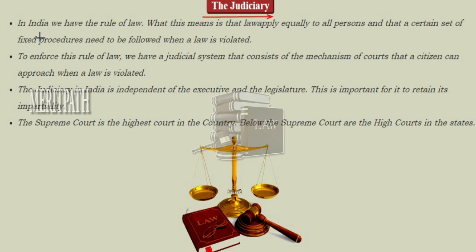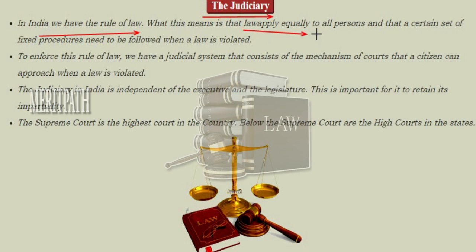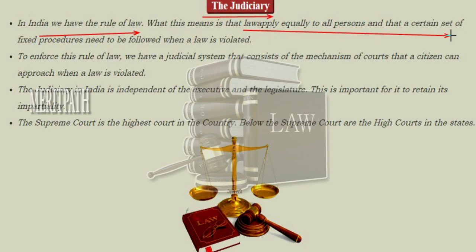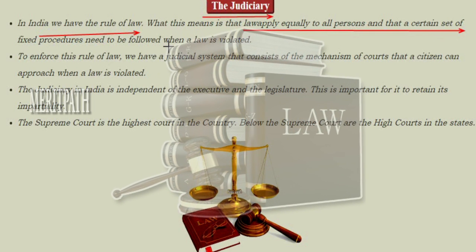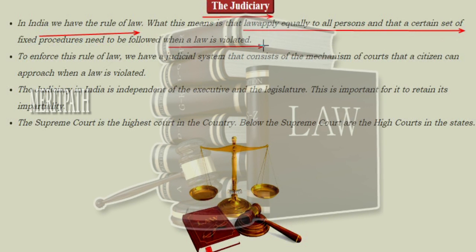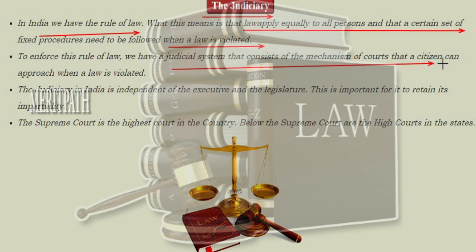In India we have the rule of law, which means law applies equally to all persons and a certain set of fixed procedures need to be followed when the law is violated. The judicial system consists of a mechanism of courts that citizens can approach when a law is violated. In districts we have district courts, for states we have a high court, and for the whole country we have a Supreme Court.